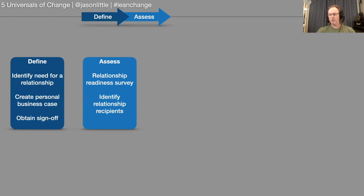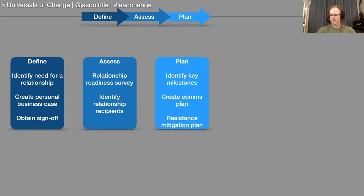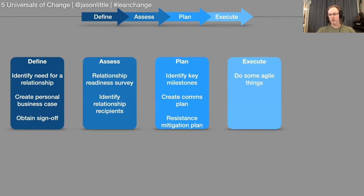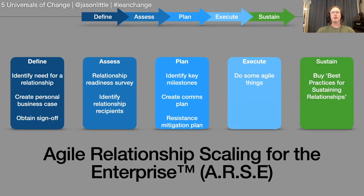We identified the relationship recipients and tried to understand and have empathy for how they would feel through this change. Once that worked, we created the plan — key milestones, a communication plan — and then my wife crafted a resistance mitigation plan, just in case the new neighbors resisted our attempts to be their friends. We wanted to make sure we could overcome that resistance so when we reported back to town hall we had a plan in place. Then we went into execute mode: monthly sprints, user stories — and then sustain mode. We bought a best practices guide for sustaining relationships. And wham — we're now friends with our neighbors.